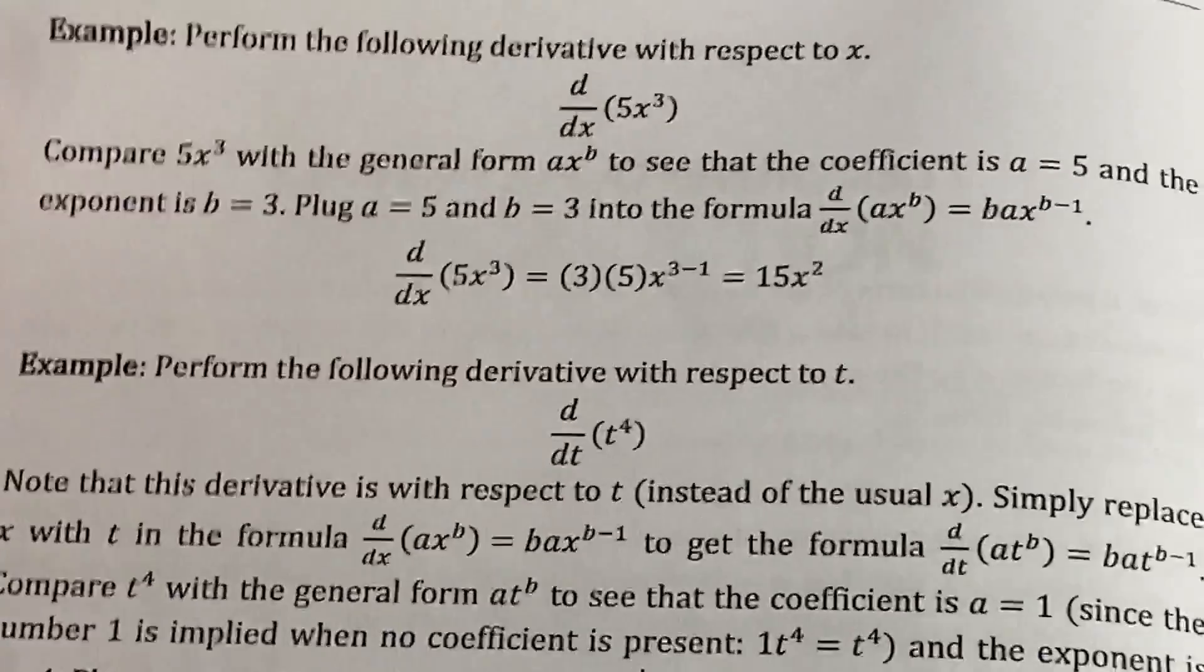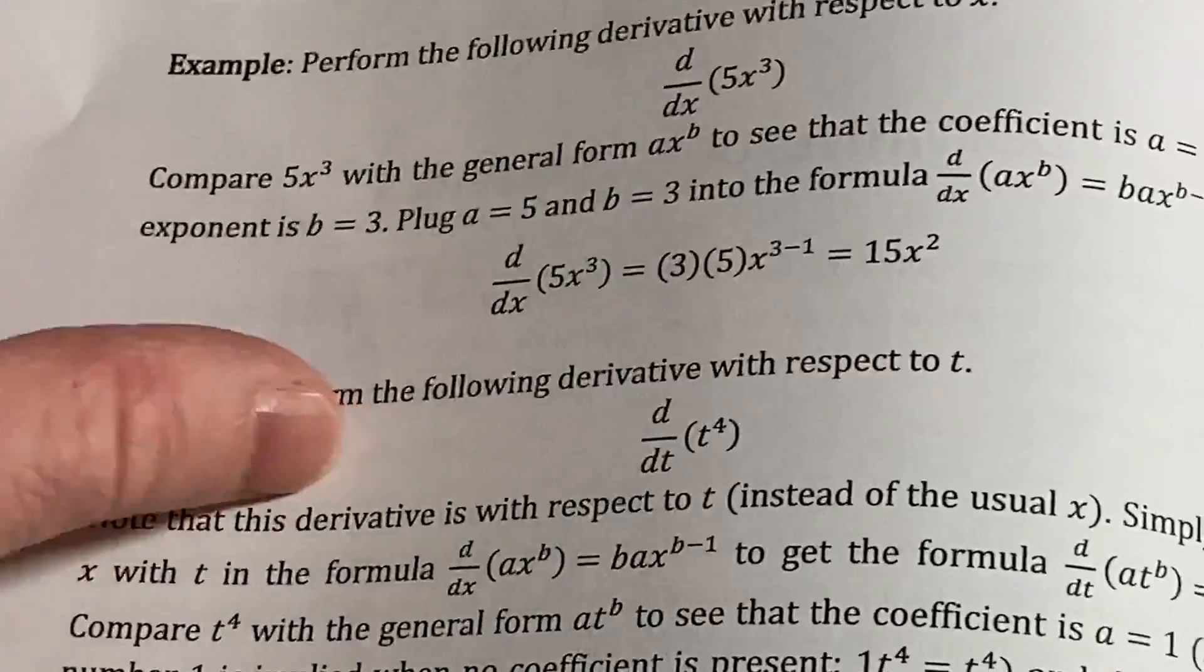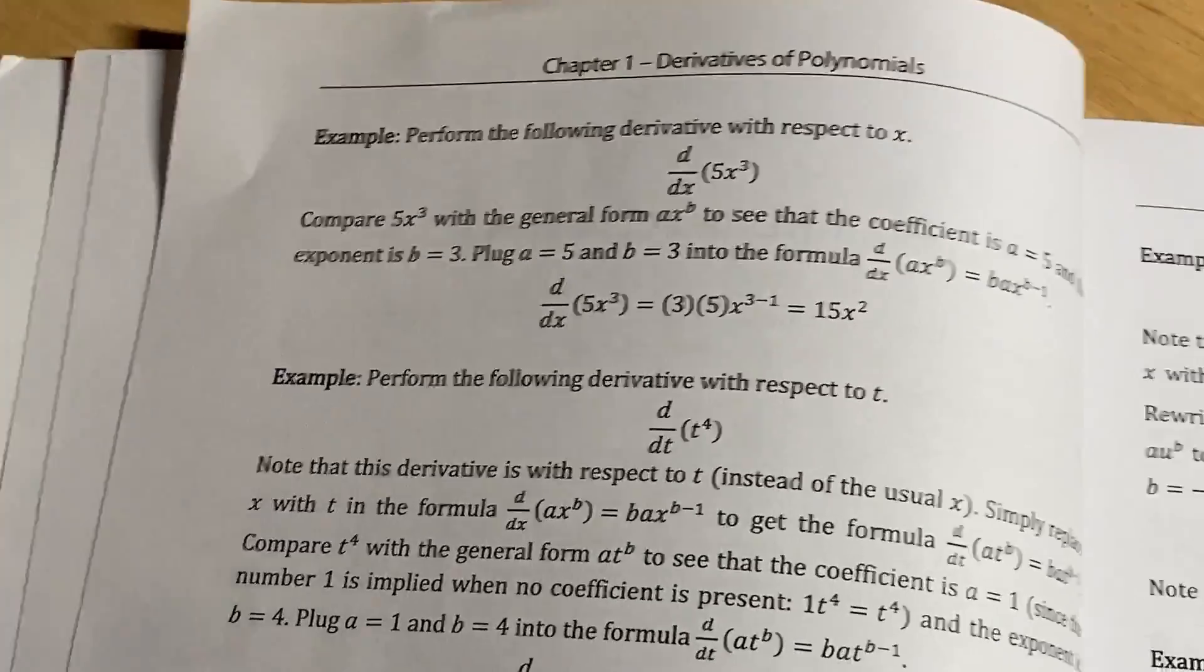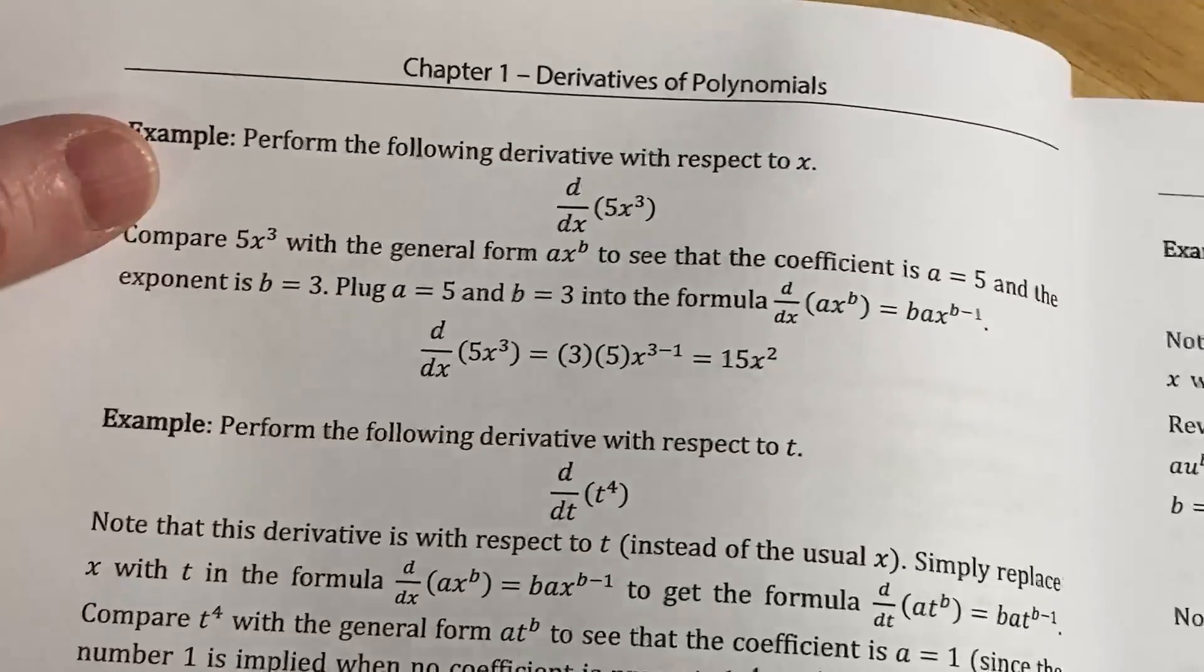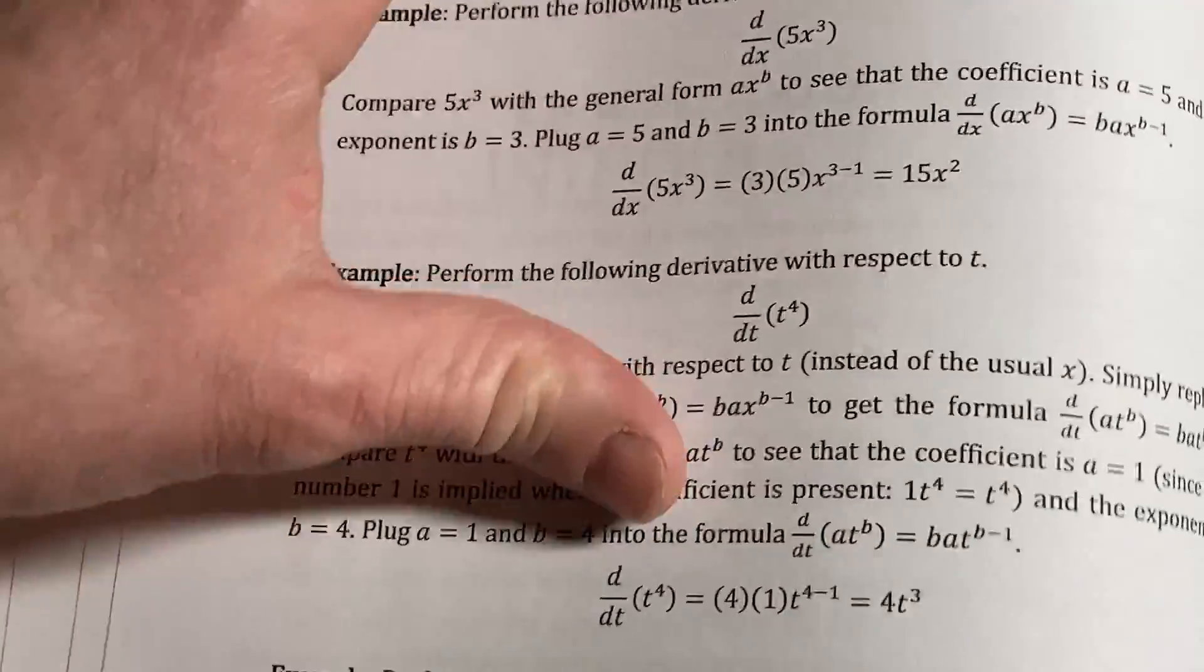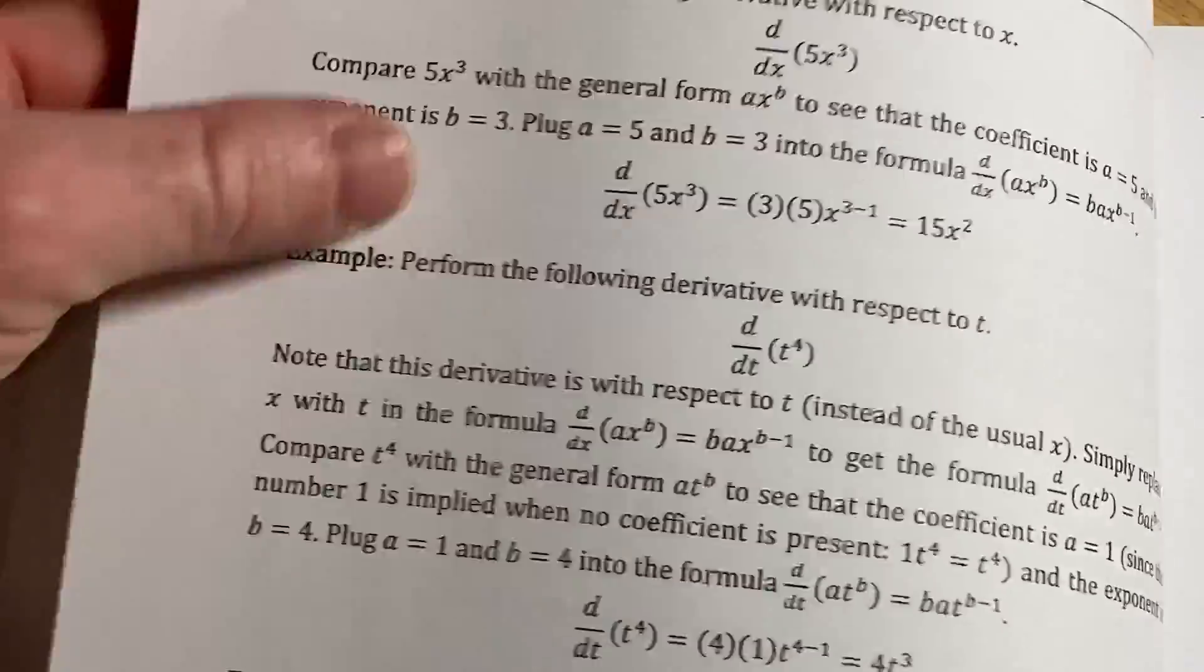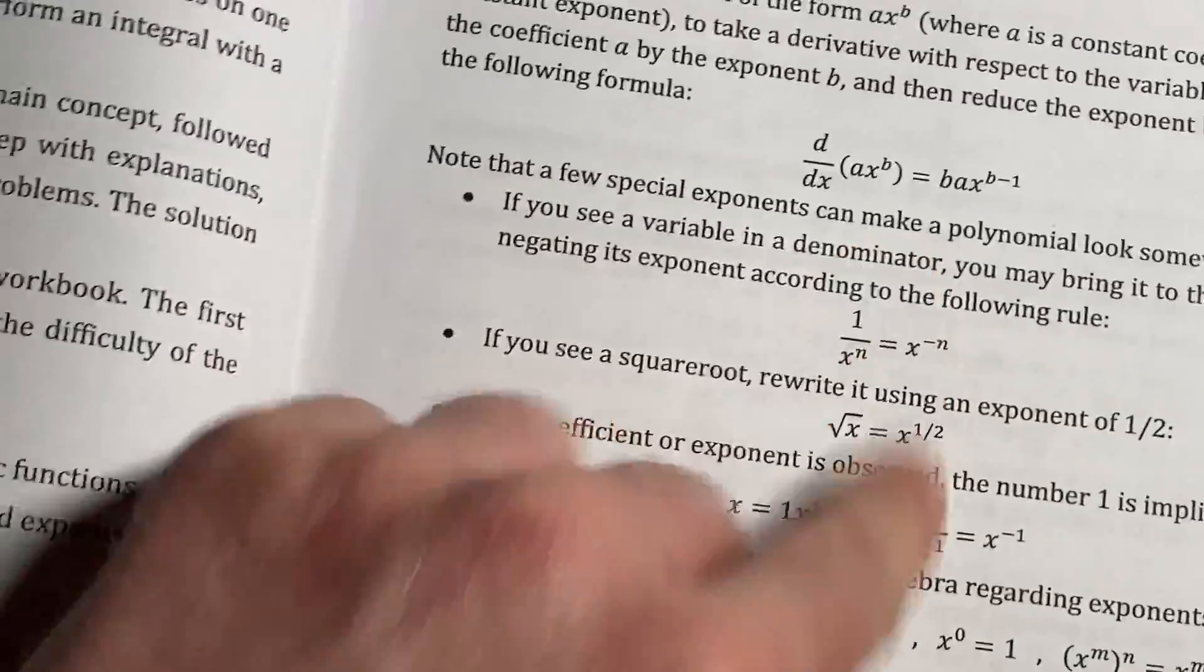But he explains here how you have to match it to this formula. He says ax to the b. Coefficient is a equals five. The exponent is b equals three. So you plug them into the formula. So he's just using the formula directly, which is not something you want to do. Once you know how to do this, you basically want to do what I did. Just bring it down and put it in the front. But when you're writing a book and you're trying to explain that to someone, it's really hard to put it in writing. So I think he does a great job.